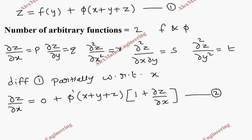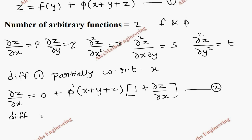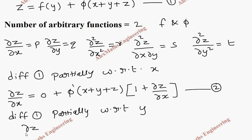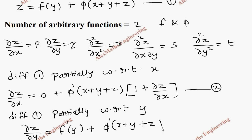In the same way, let's take the first expression again and differentiate it partially with respect to y. So dou z by dou y equals: f of y becomes f dash of y, and phi becomes phi dash of x plus y plus z. By chain rule, derivative of x is 0, y is 1, and z is dou z by dou y. This is our third expression.